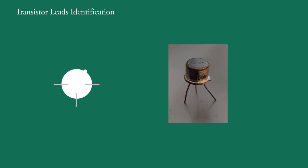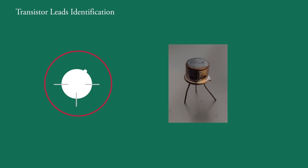In the third system, the transistors are in cylindrical form. The leads are spaced around the circumference of a circle. There is a gap — an empty part — in the arrangement. A tab on the rim of the circle is placed within this gap. Starting from this tab in the clockwise direction, the leads are in E, B, C order.